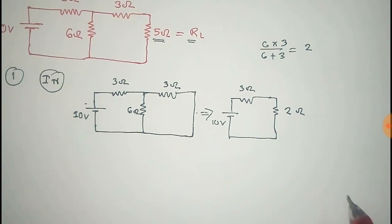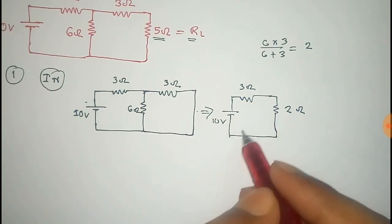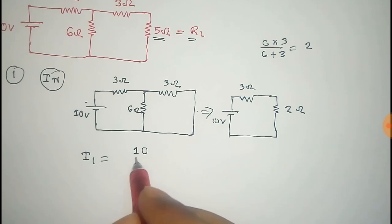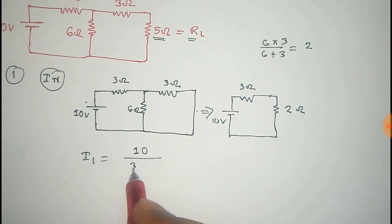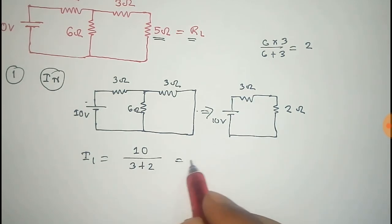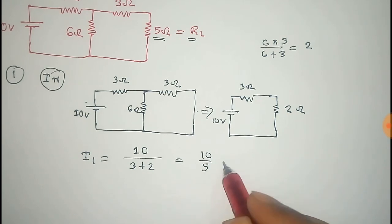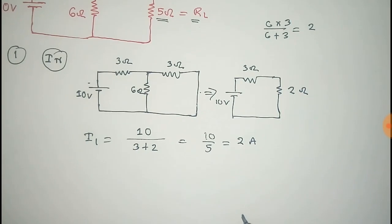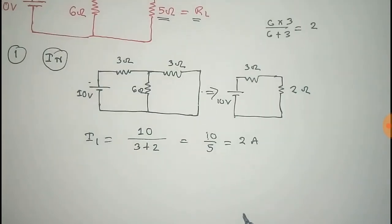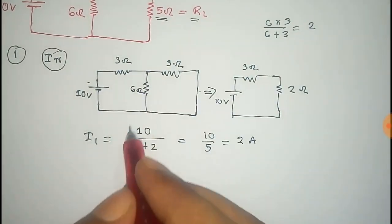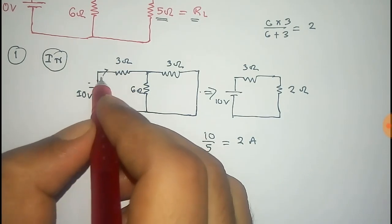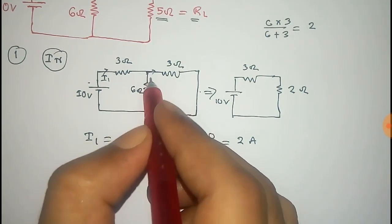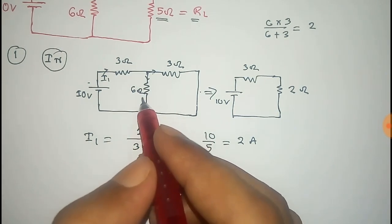Now we can find the total current of the circuit. The total current i1 equals total voltage divided by total resistance, that is 3 plus 2, so that equals 10 divided by 5, which equals 2 amperes. This 2 ampere current is generated by the 10 volt source, and after reaching this junction point, the current will divide in two directions.